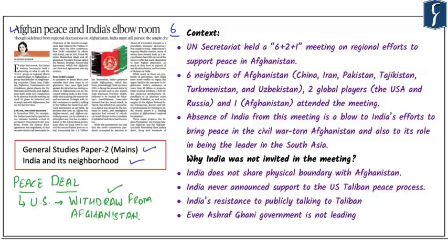India also needs to recalibrate its position in the context of Afghanistan. The UN Secretariat held a six-plus-two-plus-one meeting on regional efforts to support peace in Afghanistan. The six neighbors of Afghanistan — China, Iran, Pakistan, Tajikistan, Turkmenistan, and Uzbekistan — were invited, along with two global players, USA and Russia, plus Afghanistan itself. India's absence from this meeting is a serious blow to its efforts to bring peace to the civil-war-torn Afghanistan.